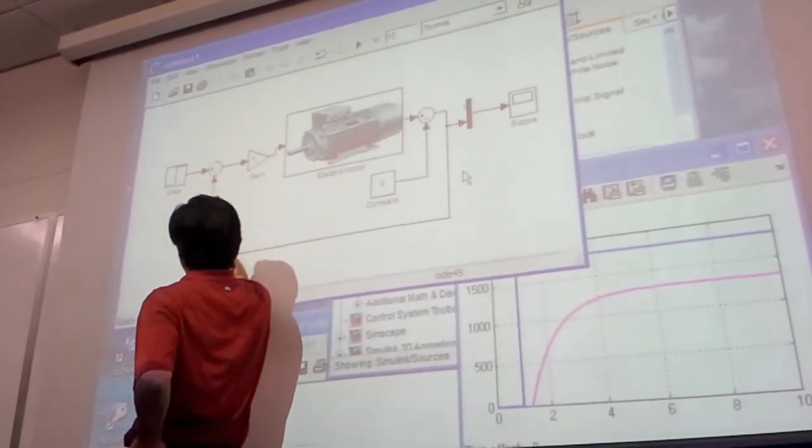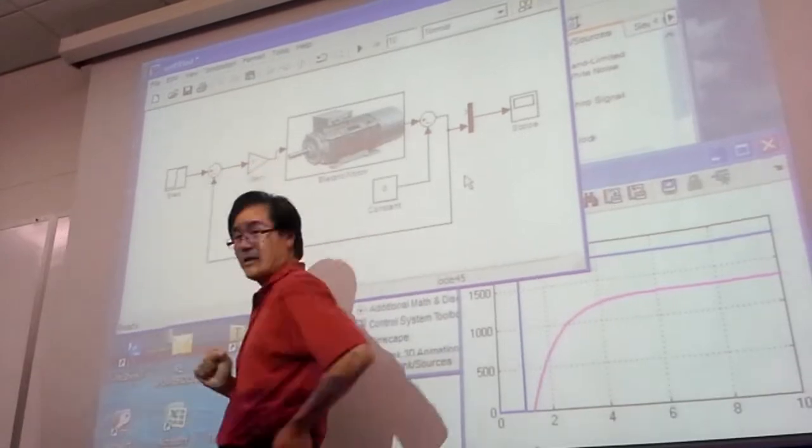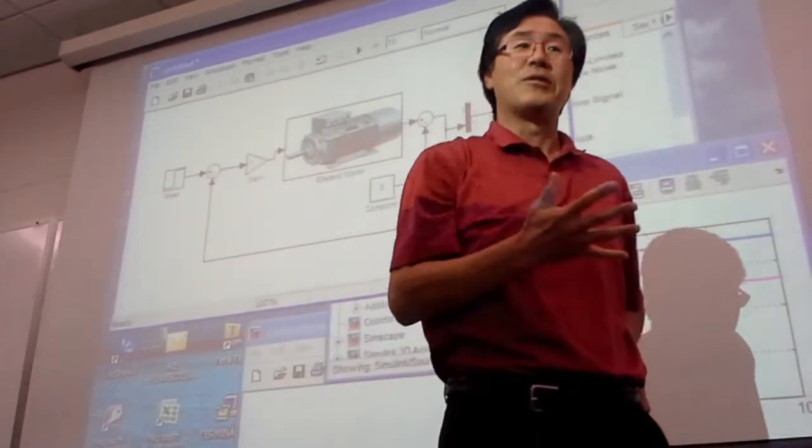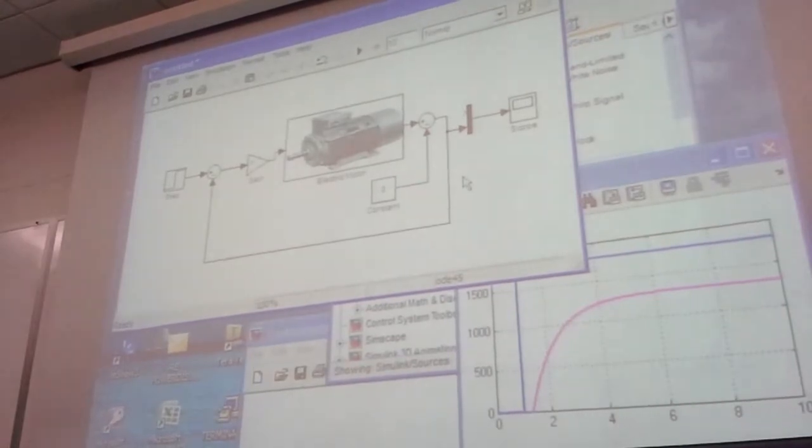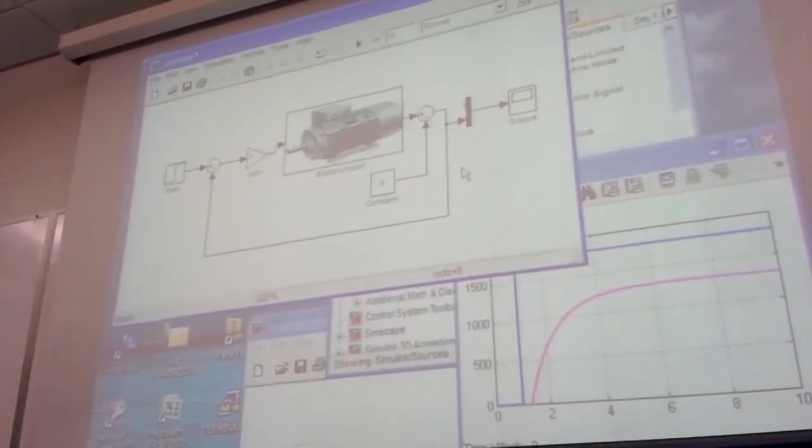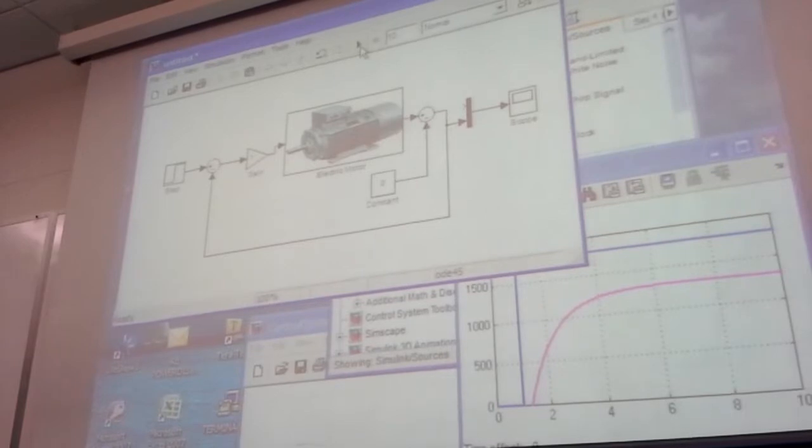How far will be depending on the input output difference. So input minus output. There is some error. Then it will generate some voltage. That is a closed loop system.